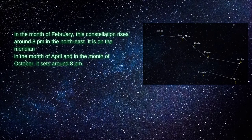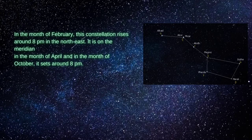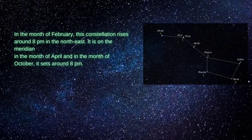In the month of February, this constellation rises around 8pm in the northeast. It is on the meridian. In the month of April and in the month of October, it sets around 8pm.